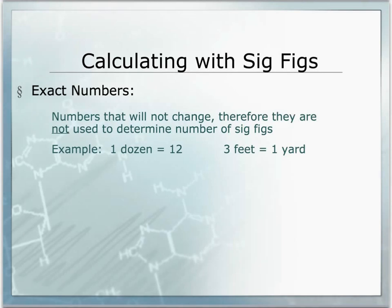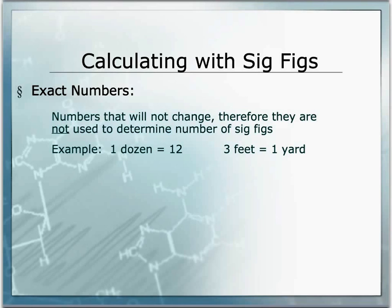When calculating with sig figs it's important that we know what numbers we need to figure out sig figs for and which numbers we don't. Exact numbers are numbers that will not change, therefore they are not used to determine the number of sig figs. An example of this would be one dozen equaling 12. We know that one dozen will always equal exactly 12 — not 12.1, not 11.9.